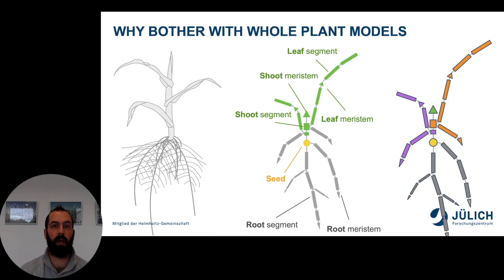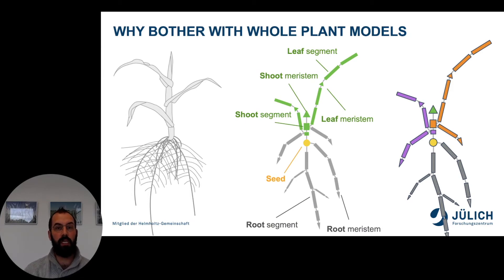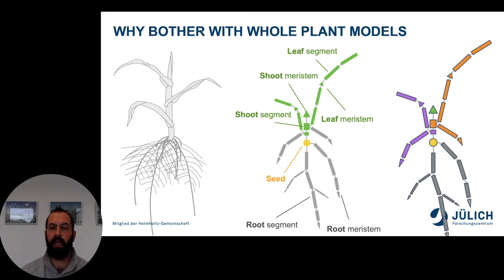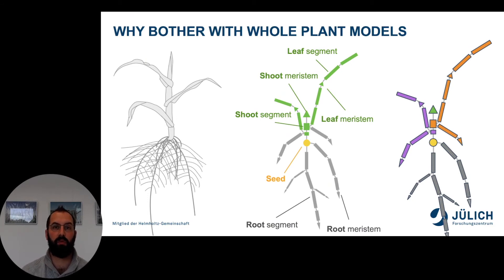The first question to address is: why do we need whole plant models? Why can't we just focus on one part, as was historically the case? A plant is not just a root or just a shoot — it's both at the same time, and the shoot and root form a single network. That single network does not have one unique connection point, as seen in monocot plants where roots form on the nodes, meaning there are multiple connections between root and shoot. In that case, the fluxes between these two parts will not be unique and might change depending on which part you are looking at.